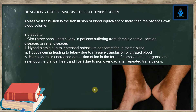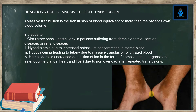Massive transfusion is the transfusion of blood equivalent to or more than the patient's own blood volume. It leads to: number one, circulatory shock, particularly in patients suffering from chronic anemia, cardiac diseases, or renal diseases; number two, hyperkalemia due to increased potassium concentration in stored blood; number three, hypocalcemia leading to tetany due to massive transfusion of citrated blood; number four, hemosiderosis — increased deposition of iron in the form of hemosiderin in organs such as endocrine glands, heart, and liver due to iron overload after repeated transfusions.